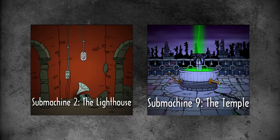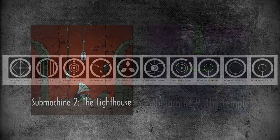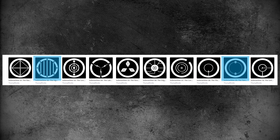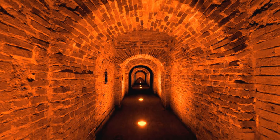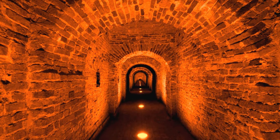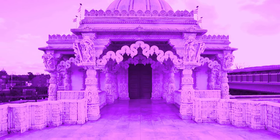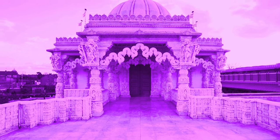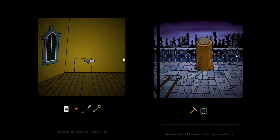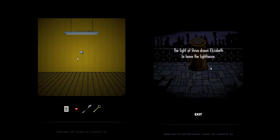Submachine 2: The Lighthouse vs. Submachine 9: The Temple. The first characteristic is perhaps subjective: community opinion holds that Sub 2 consistently has the most disturbing, claustrophobic, and eerie soundtrack in the whole series, while Sub 9 is consistently thought of as having the most lighthearted, upbeat, and ethereal soundtrack. This sets the stage well for the general feelings these two games evoke, and they are direct contrasts of each other.